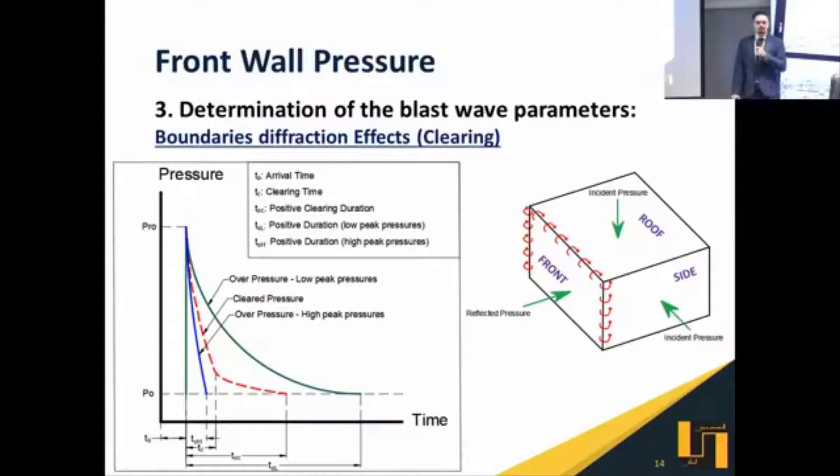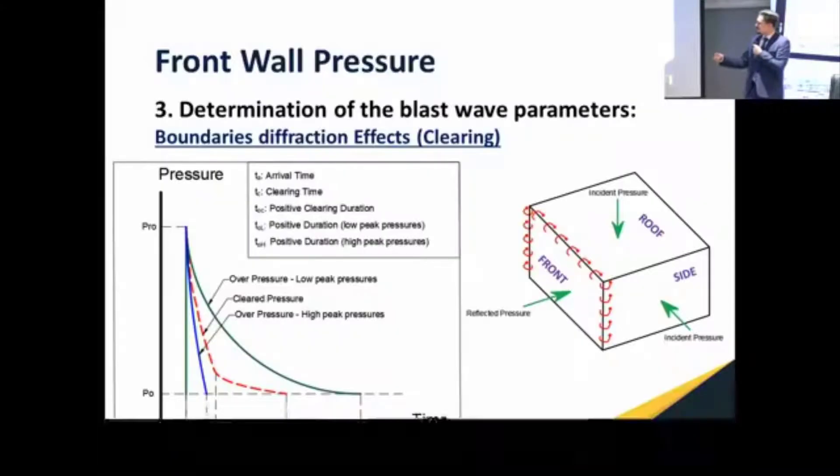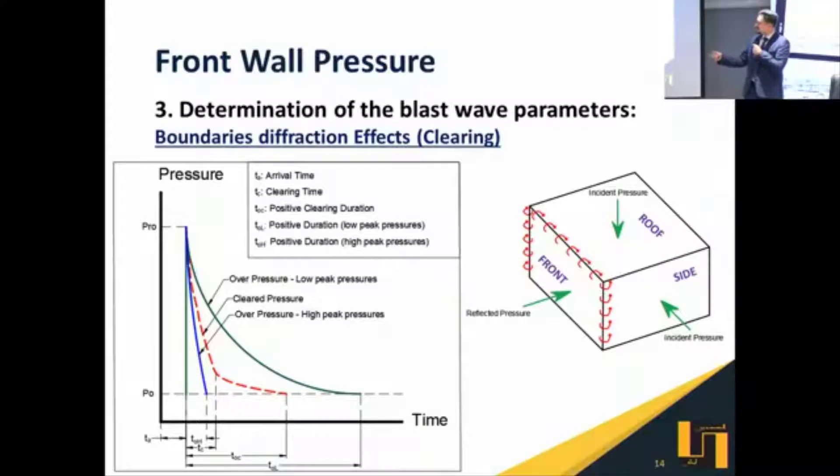Regarding the reflected pressure, as it expands towards the boundary of the front wall, it diffracts and this causes this pressure to decay at a high ratio. This phenomenon is called the clearing or clearance effect. If we check this diagram, for example, the pressure in green is the normal behavior of the reflected overpressure for low peak pressure values. Due to this clearing effect, the red curve shows that this peak value decays at a higher ratio.